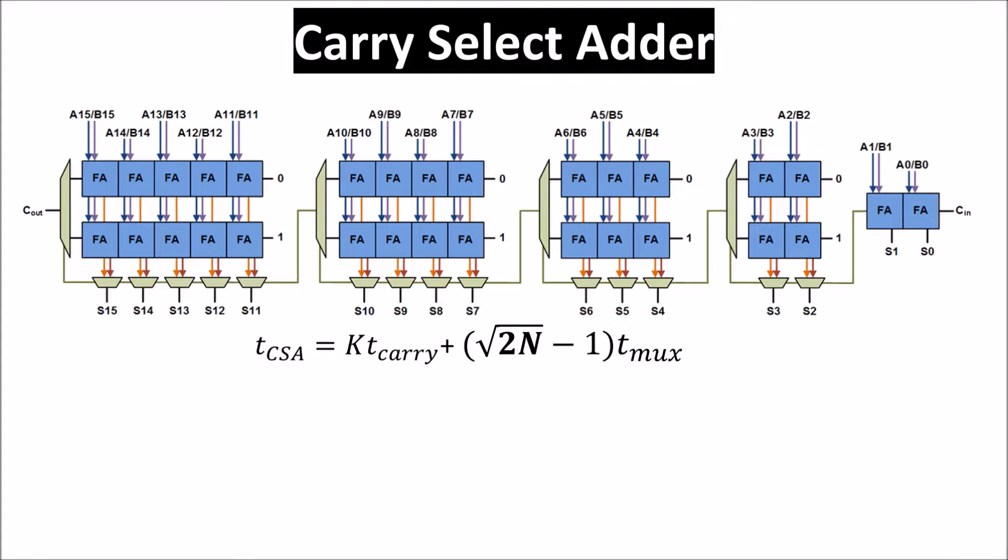This video is about the carry select adder. It is an adder used in microprocessors when you want to sacrifice area to get an advantage in speed.